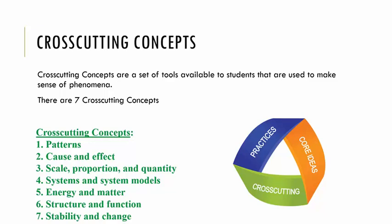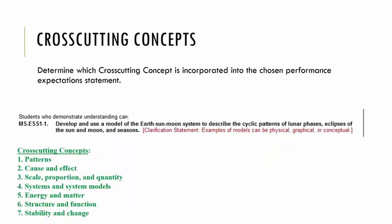Cross-cutting concepts are a set of tools available to students that are used to make sense of phenomena. There are seven cross-cutting concepts: patterns; cause and effect; scale, proportion, and quantity; systems and system models; energy and matter; structure and function; and stability and change. Reading through the performance expectation statement, cyclic patterns can be identified as the cross-cutting concept. Students will be using patterns to develop their understanding of seasons.